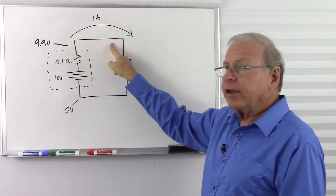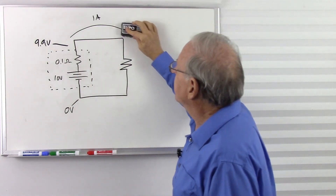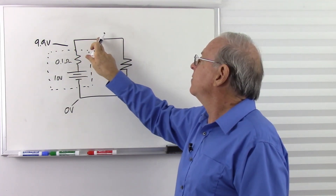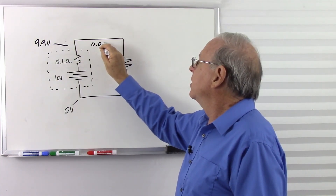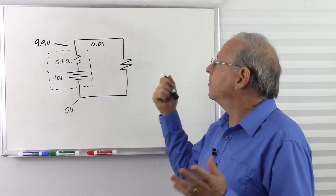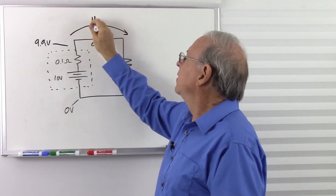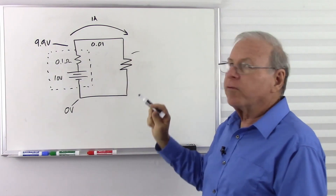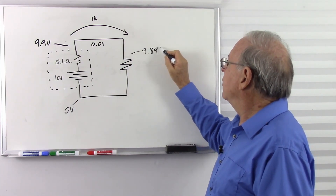This wire does have resistance — a very, very tiny amount, so tiny that we usually ignore it. But in the real world it's going to have some resistance. Let's say from the battery to the resistor we have a resistance of about a hundredth of an ohm, and let's keep 1 amp flowing through it. So we start with 9.9 volts, lose a hundredth of a volt, and by the time we get across to the resistor we'd be down to 9.89 volts.